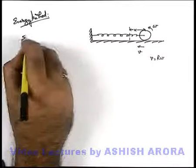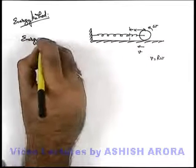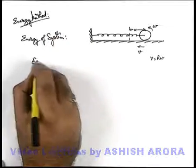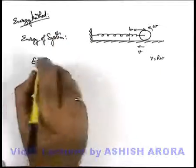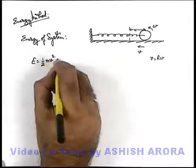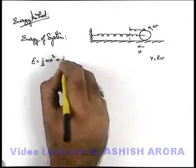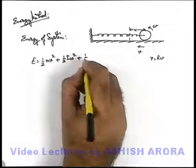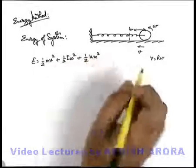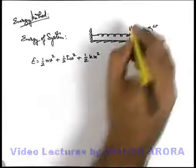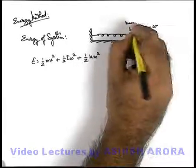And if we write energy of the system at an intermediate instant it can be written as E is equal to: the kinetic energy in the cylinder will be translatory, it is half m v square, for its rotational motion it is half I omega square, and the energy stored in spring will be half k x square if it is at a displacement x from the mean position. This is the point we consider as mean position.